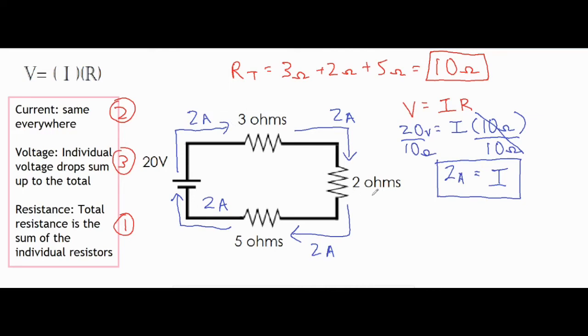And I know the individual resistances because they're labeled right by the resistor. And I also know the current flowing through each one of them because it's that same number. It is 2 amps, so I can go ahead and multiply I times R for each of them and find the voltage drop.